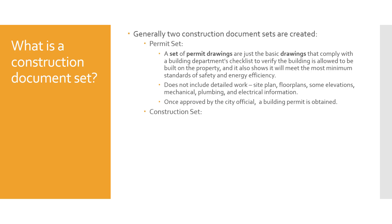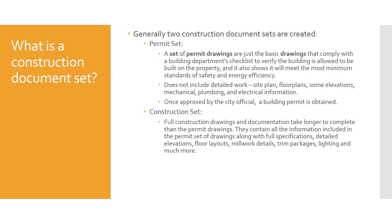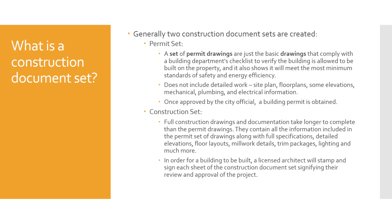The second document is the actual construction set itself — what I call the big daddy. Full construction drawings and documentation take a lot longer to complete than the permit drawing because we're including all the information: the full specifications, all the details, the elevations, the millwork details, trim packaging, lighting, finishes, furniture — all that stuff. For this building to be built, the licensed architect is going to stamp and sign every single sheet of the construction document set, which signifies that they've reviewed and approved the project. There's a lot of responsibility in being an architect, so just be aware of that if you're seeking out more architectural responsibilities.